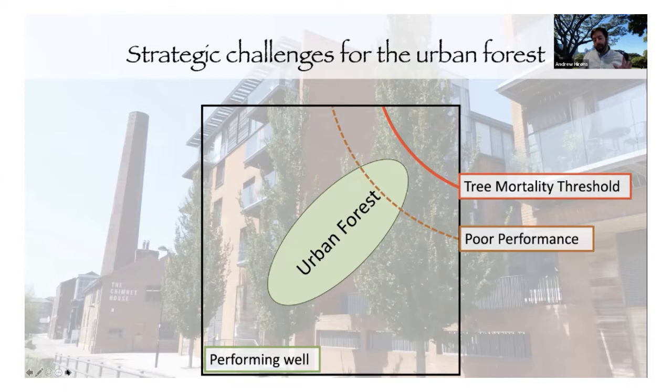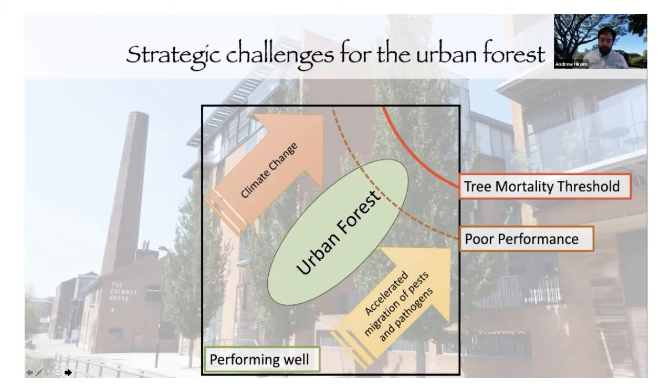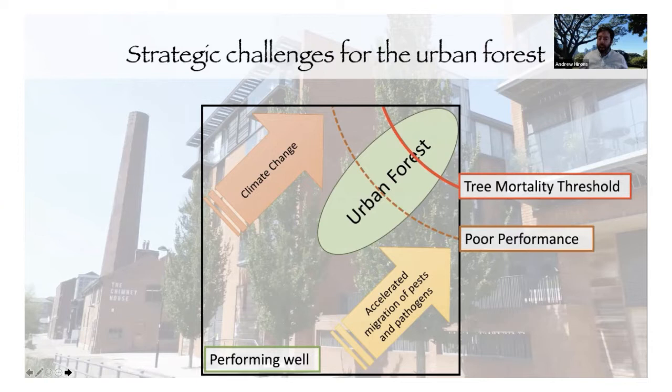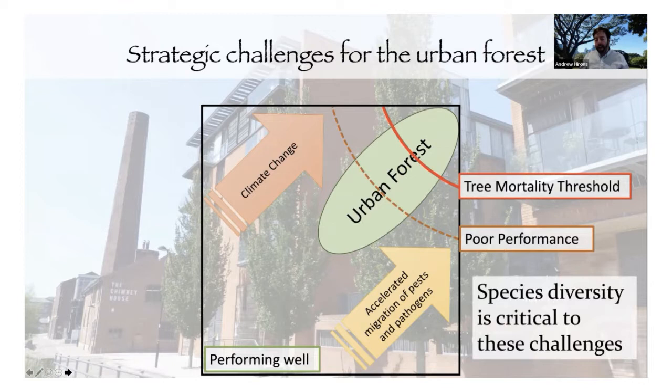We need to be aware of a number of different pressures — climate change is certainly one of those — and the accelerated migration of pests and pathogens caused by things like global trade really drives the urban forest into poor performance, even beyond a tree mortality threshold. We're likely to see increased tree mortality as a result of those pressures, and species diversity is going to be critical to meeting those challenges.